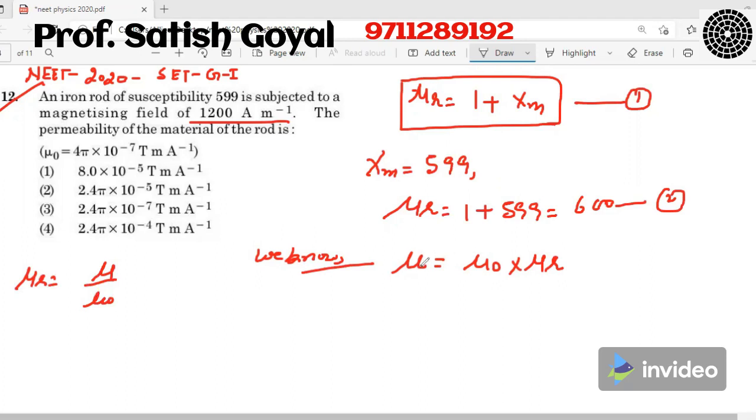So we have mu naught given as 4 pi into 10 to power minus 7, mu r is 600. So we simplify this, 2400 pi into 10 to power minus 4 tesla meter per ampere.